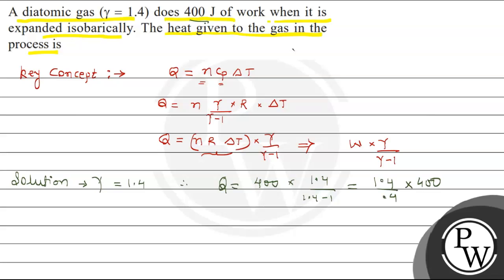And finally, the value of Q we get is Q equals 1400 J.